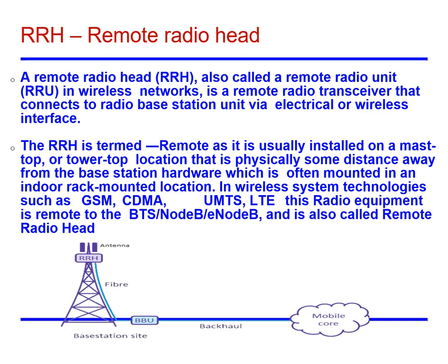A Remote Radio Head (RRH), also called a remote radio unit, is a remote radio transceiver in wireless networks that connects to the radio base station unit via electrical or wireless interface technologies. The RRH is termed 'remote' as it is usually installed on a mast-top or tower-top location, physically some distance away from the base station hardware, which is often mounted in an indoor rack-mounted location. In wireless system technologies such as GSM, CDMA, UMTS, and LTE, this radio equipment remote to the BTS or eNB is called a remote radio head.